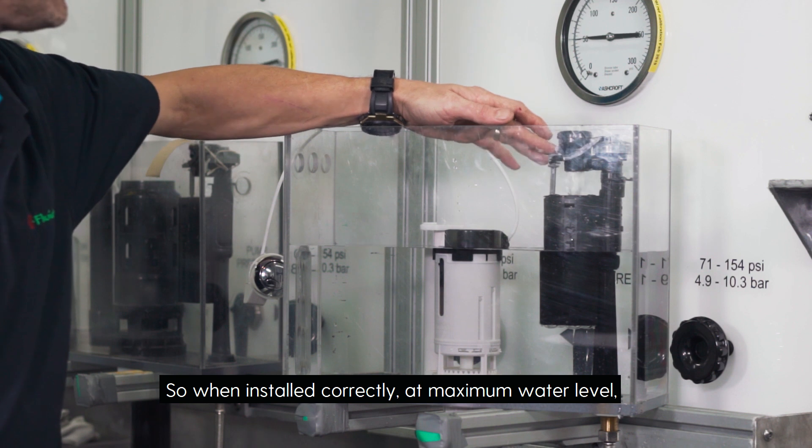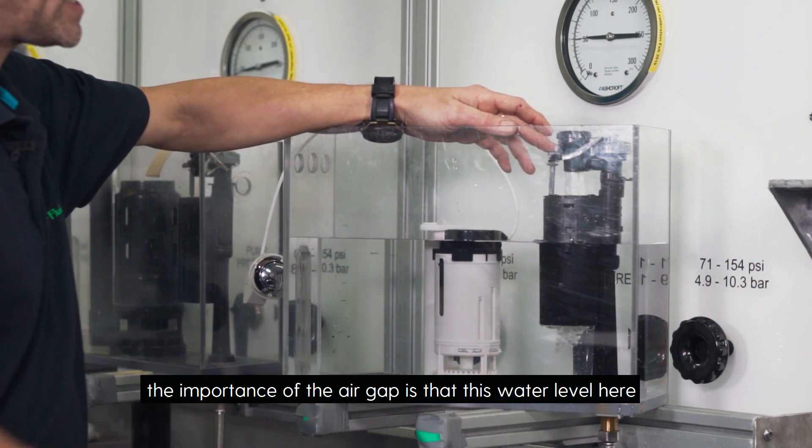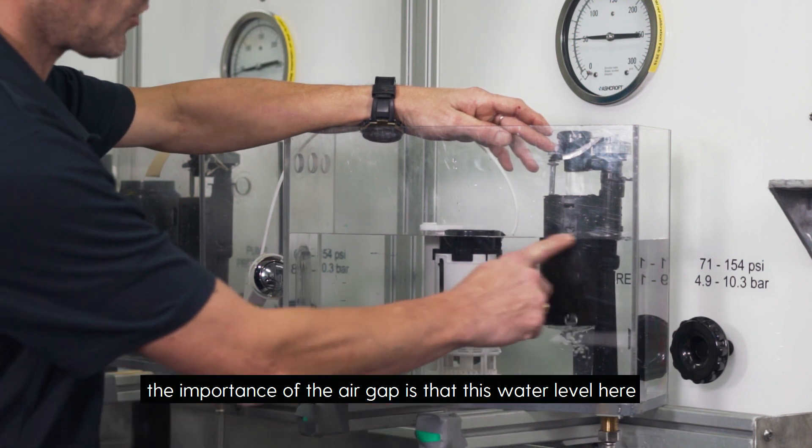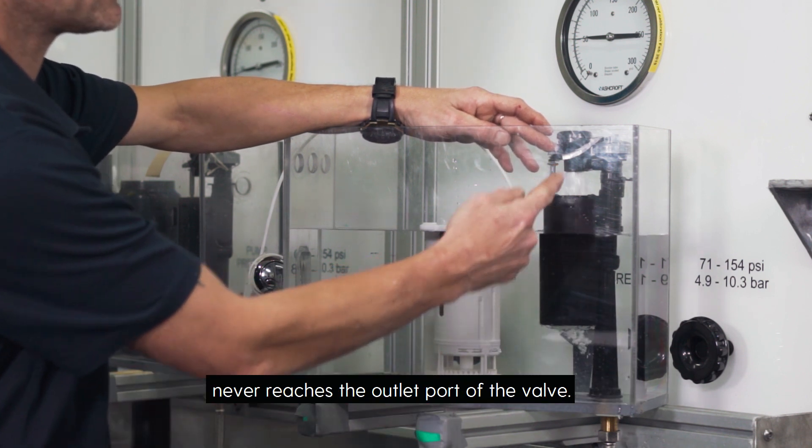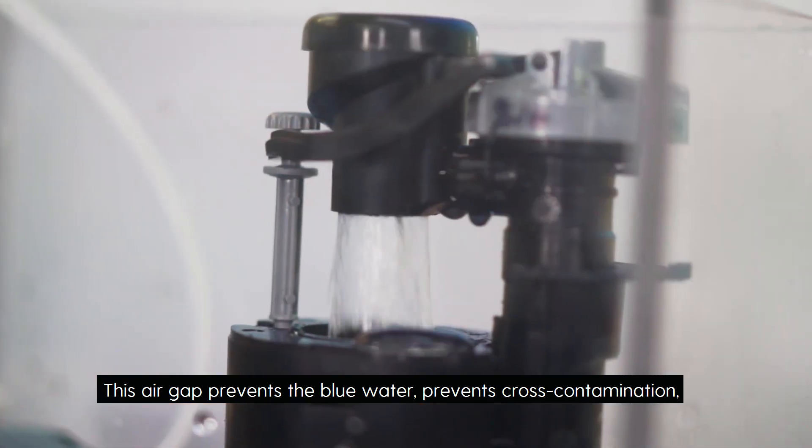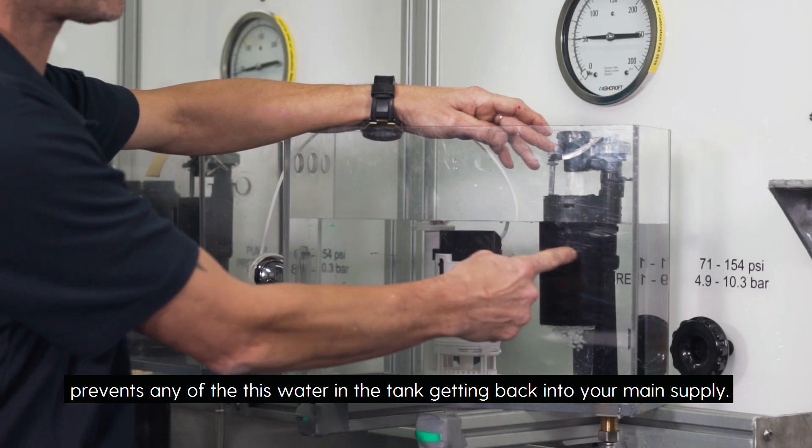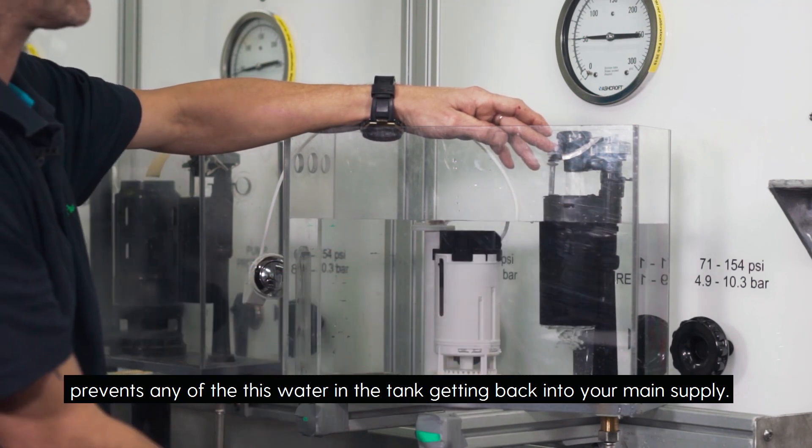When installed correctly at maximum water level, the importance of the air gap is that this water level never reaches the outlet port of the valve. This air gap prevents cross contamination and prevents any of this water within the tank getting back into your main supply.